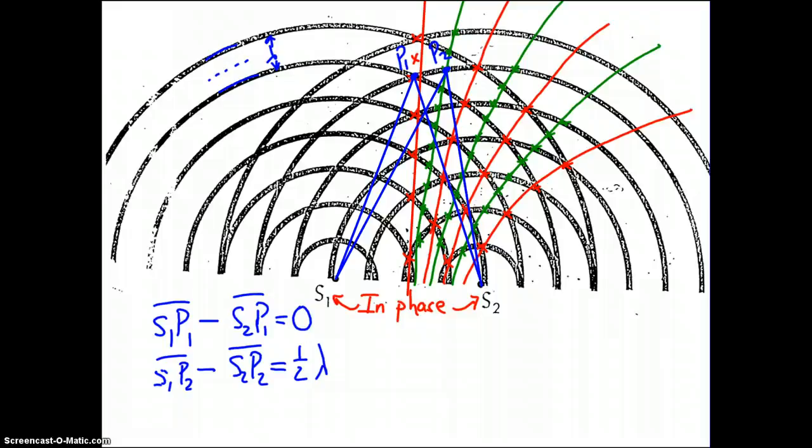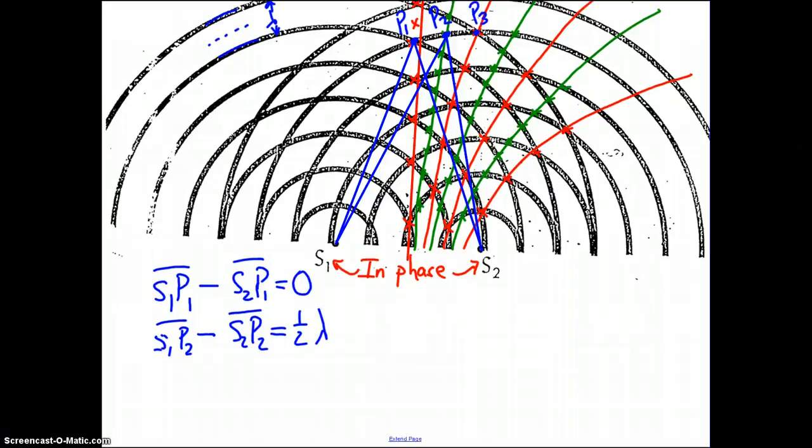Now, let's continue to look at some other points along the way. Here's point P3. If I take line segment S1 P3, and I'm not going to draw it on here because it gets to be too many lines and muddies up the diagram, and subtract the line segment S2 P3, we get a whole wavelength for the path difference between those two.